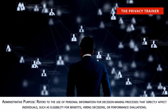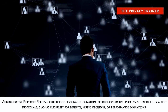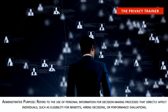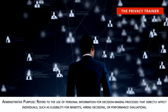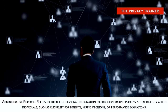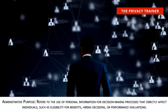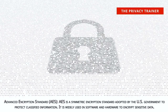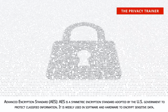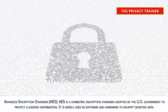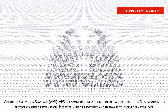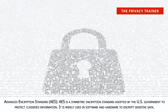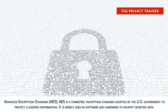Administrative purpose. Refers to the use of personal information for decision-making processes that directly affect individuals, such as eligibility for benefits, hiring decisions, or performance evaluations. Advanced Encryption Standard, AES. AES is a symmetric encryption standard adopted by the U.S. government to protect classified information. It is widely used in software and hardware to encrypt sensitive data.